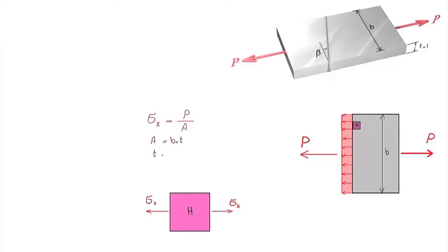Thickness t is assumed to be 1, so stress in the horizontal direction is simply force divided by the width of the plate: sigma_x = p/b. That represents the state of stress for that particular point. If we move the stress element to any other point within the body of this plate, the stress is going to be the same.